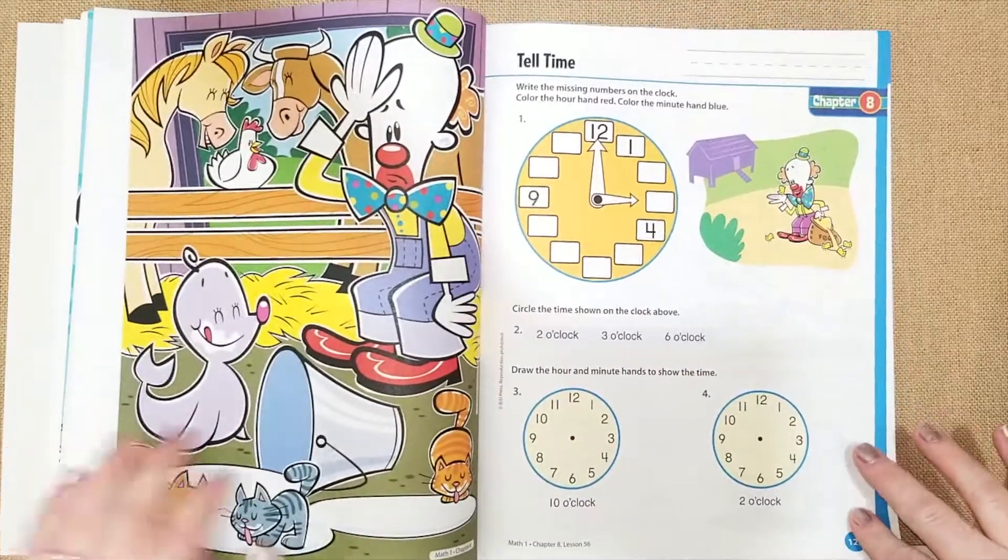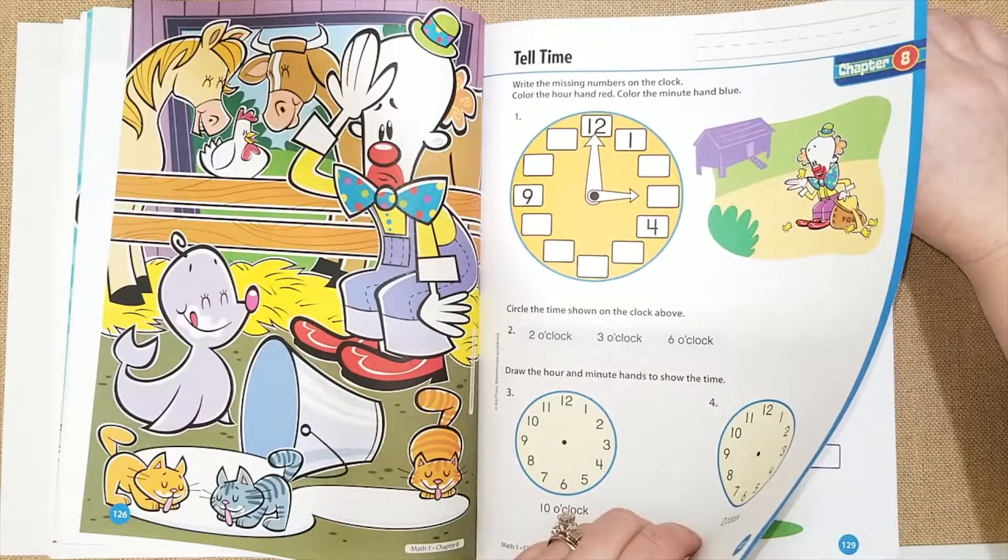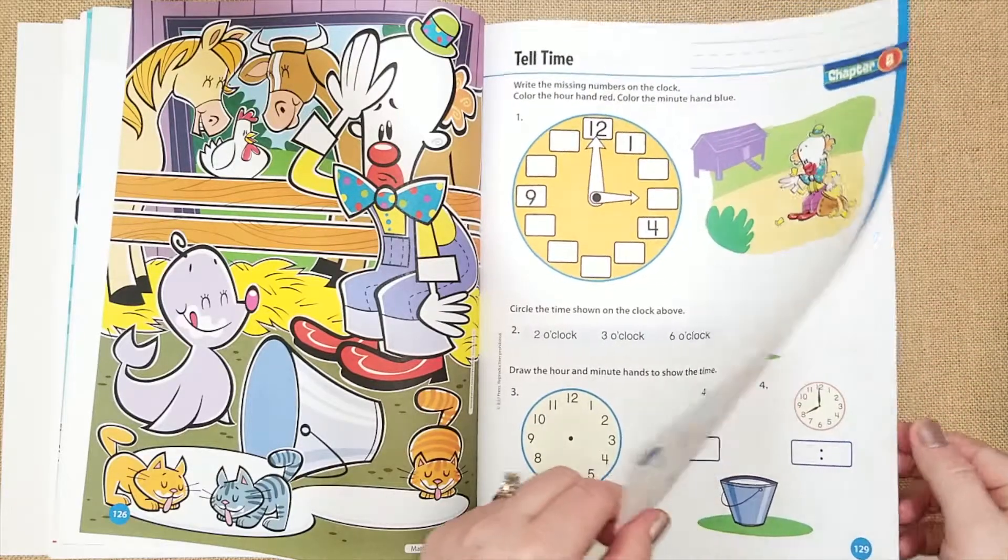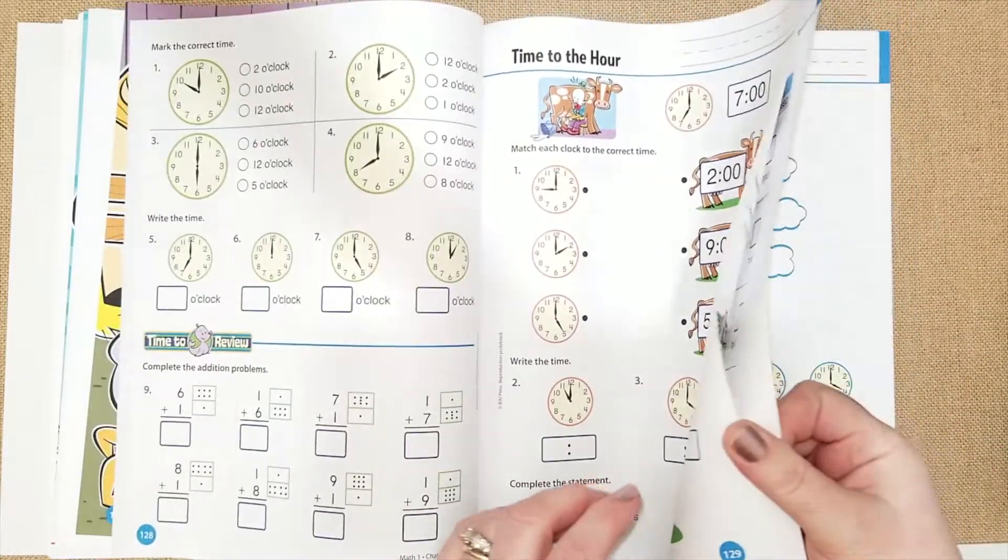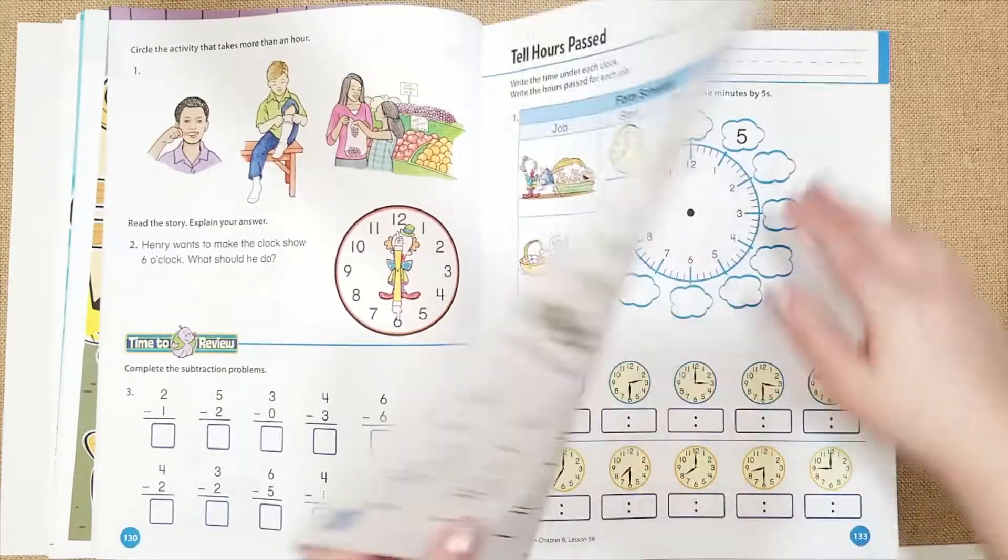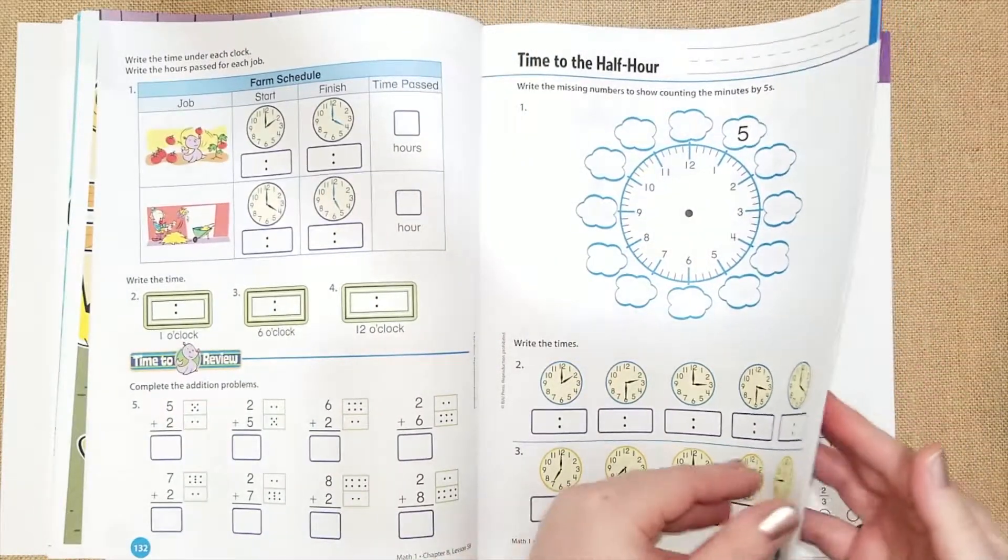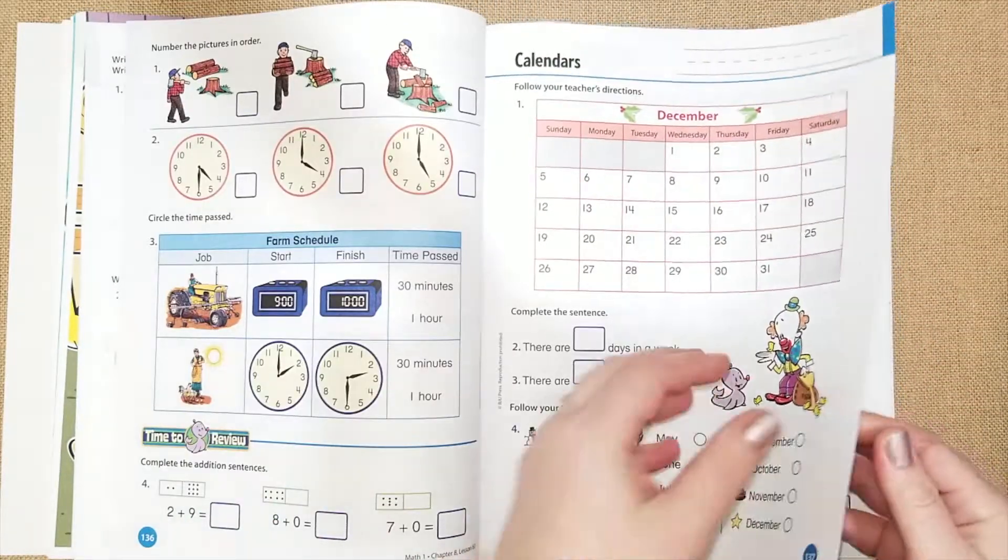Chapter eight, they're going to be telling time, which we actually did a lot of work on in our Kumon book. And she finished that up. So this should be pretty simple for her. So if your first graders just now learning time, this will be great. And it'll be just a good refresher for her.